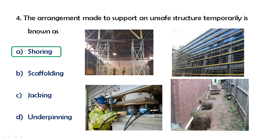Scaffolding is a temporary structure used on buildings for workmen and materials during painting, plastering, or ACP work. Types of scaffolding include: Single Scaffolding, Double Scaffolding, Cantilever Scaffolding, and Needle Scaffolding.